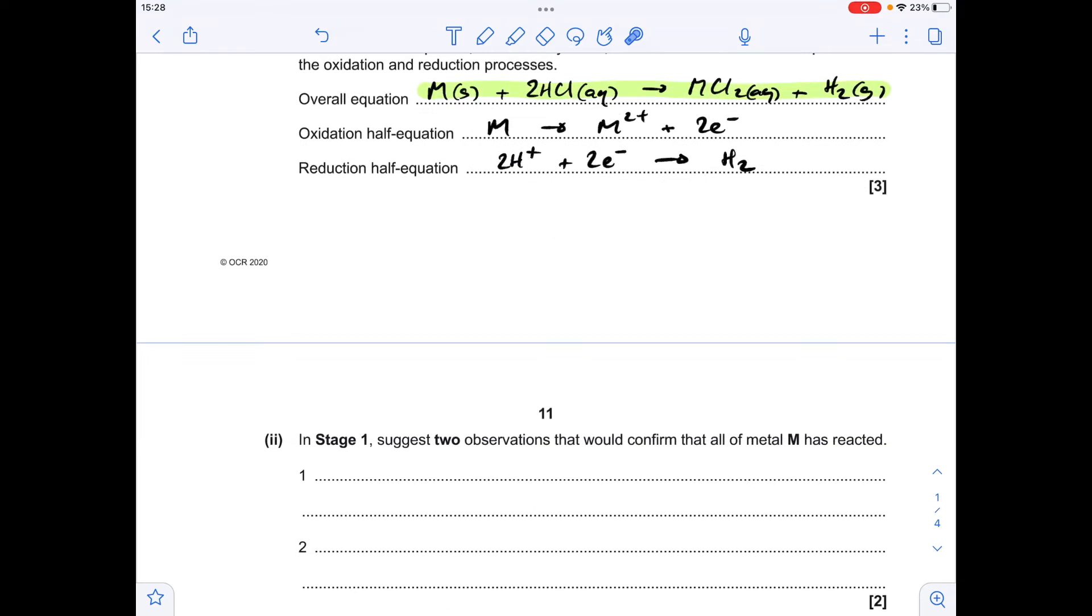For the next part of the question, we're going to use the overall equation to help with the observations. When all of the metal has reacted, we're going to stop seeing bubbles of hydrogen, and the other observation, when all of the metal's reacted, it will completely have dissolved into the acid.